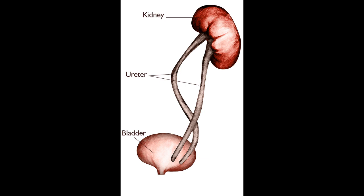These tube-like narrow structures which start from kidneys and open into the urinary bladder are called ureters. These ureters are 30 centimeters in length. The ureters carry urine from the kidney to the urinary bladder. The movement of urine in the ureters occurs in the form of waves due to peristaltic movement, and it reaches the urinary bladder.